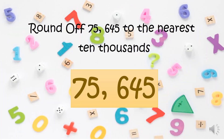Now let us have another example. Round off 75,645 to the nearest thousands. Ira-round off nga ba natin siya saan naman? Correct! Sa 10,000. So let us identify kung sino nga ba ang nasa 10,000 place. Correct! Si 7. And then we are going to encircle kung sino ang nasa right ni 7 — siya ay si 5.